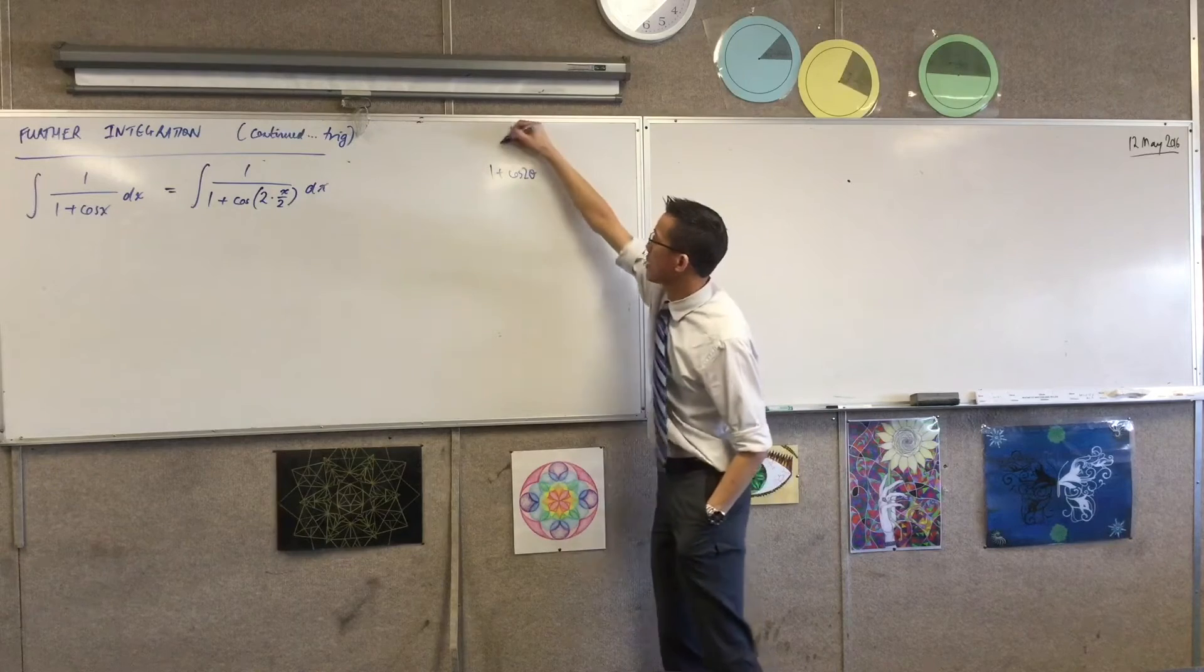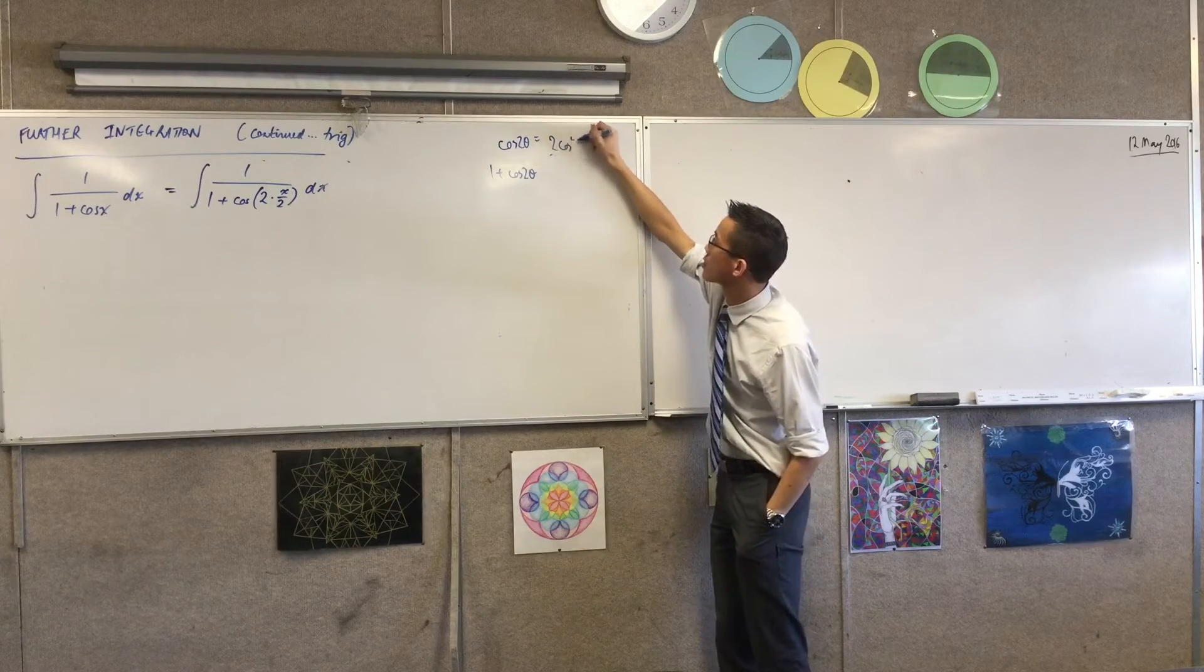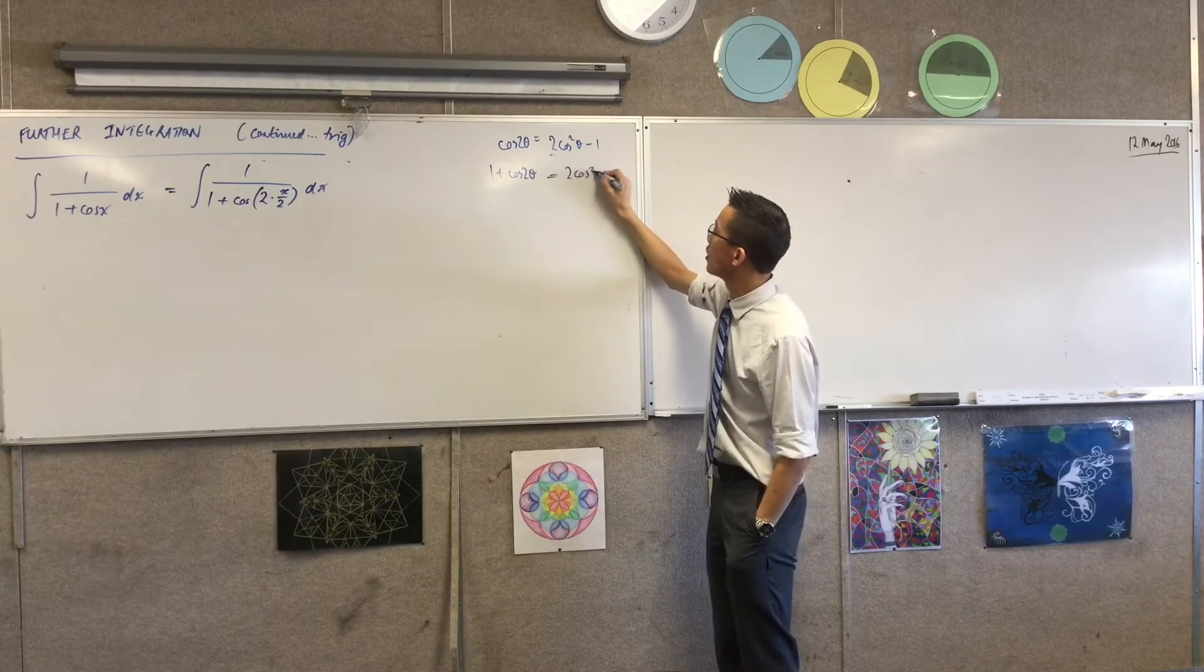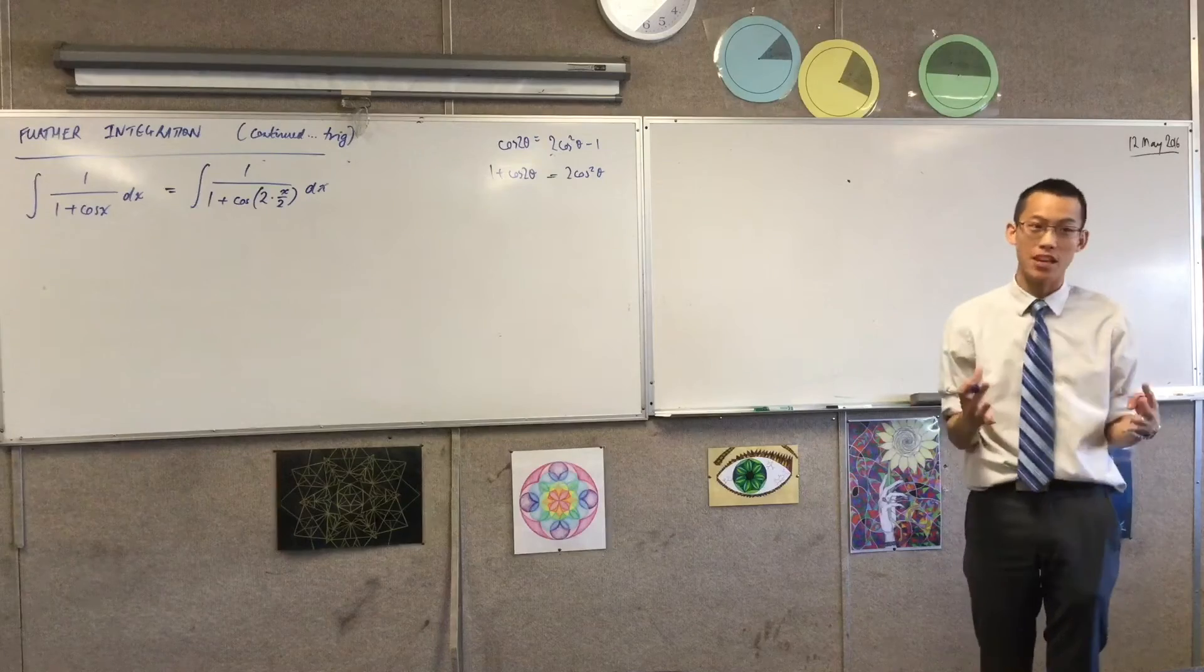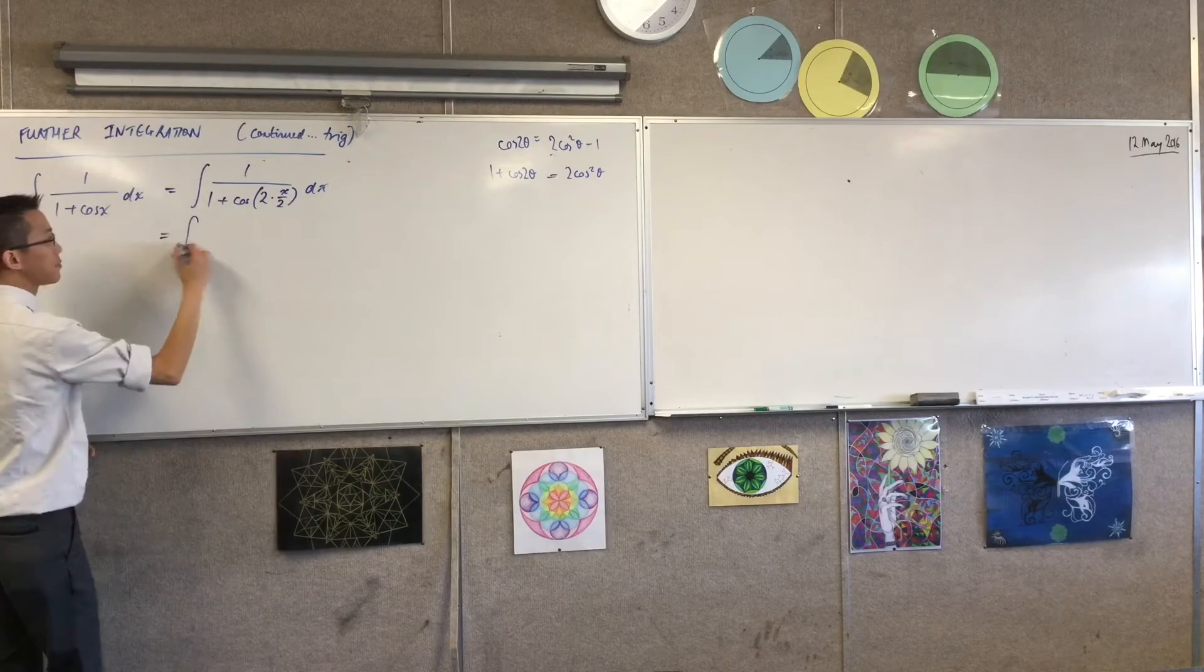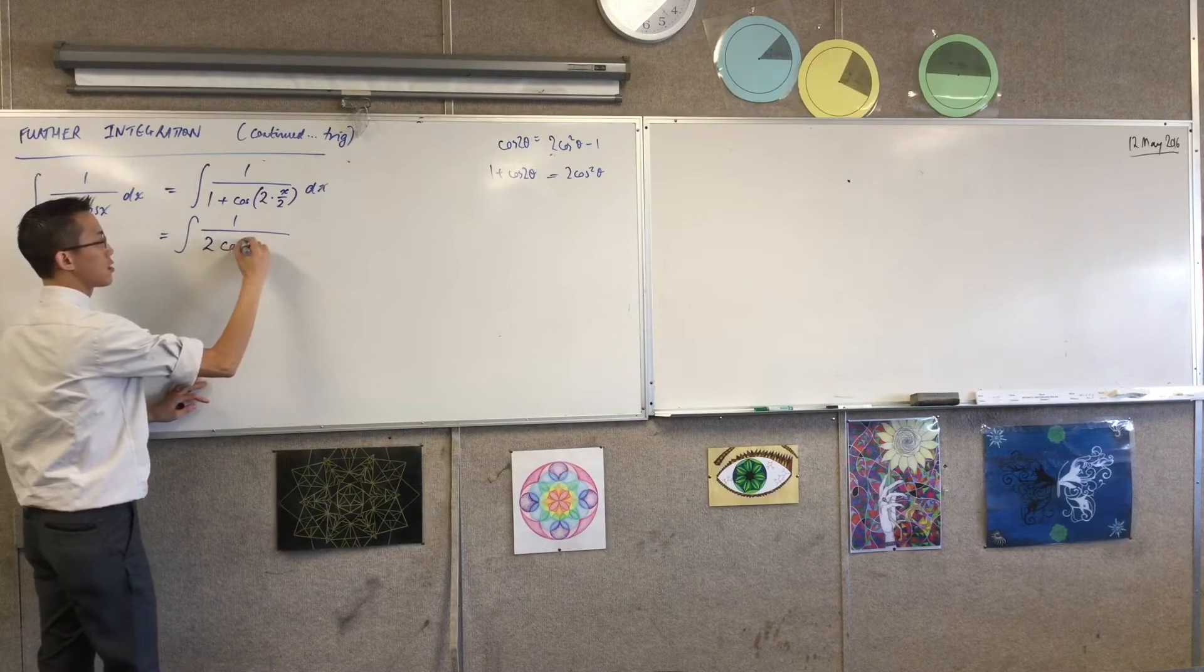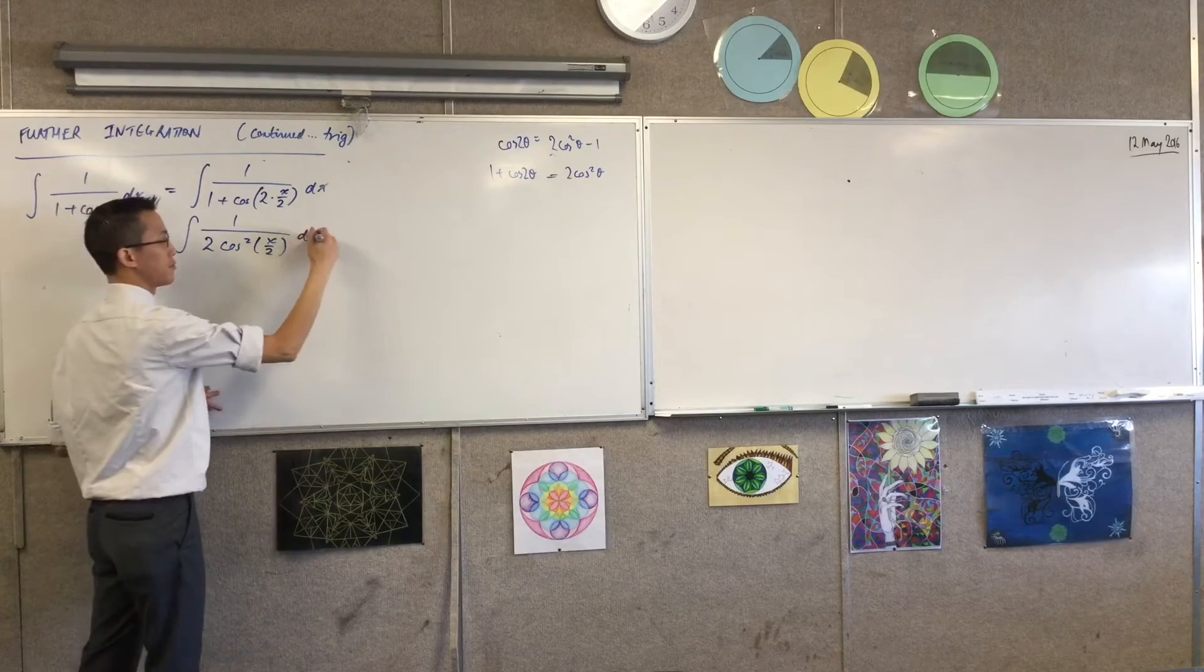So now this is in the form 1 plus cos 2 theta, where our theta happens to be x over 2. What identity could I get out of this? Where did this come from? So yeah, if you want to think, the line before this is cos 2 theta, which is 2 cos squared theta minus 1. You remember that? So that's why the minus 1 came over here. It's plus 1. So what you really have is 2 cos squared theta here. Now, as I've just established, the theta that I'm thinking about is x on 2.